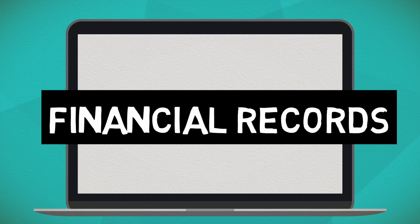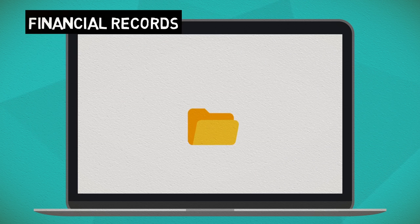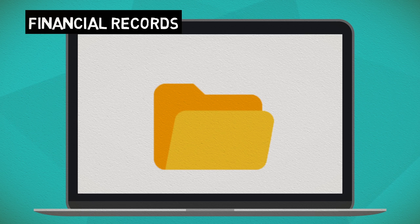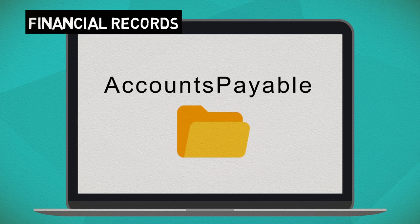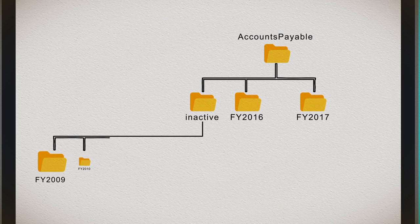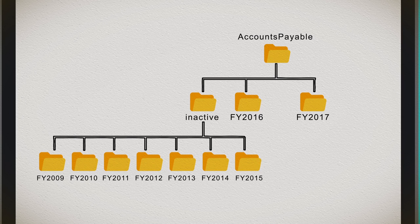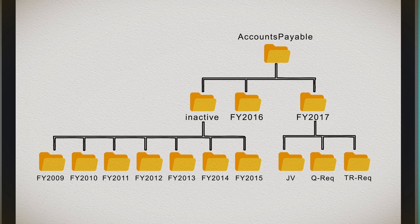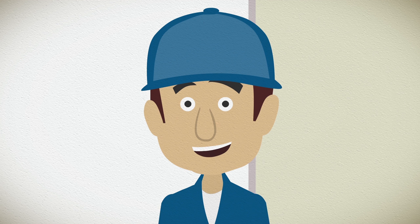Let's take financial records for example. It is best to create the folder structure according to accounting activities, such as accounts payable. Our retention schedule states a 7-year retention period based on legislation. By creating a folder FY2017 within accounts payable, we can safely and accurately destroy all financial information — like invoices, travel requisitions, and journal vouchers — once that retention period is met. Very simple, because we created a folder structure with destruction in mind.